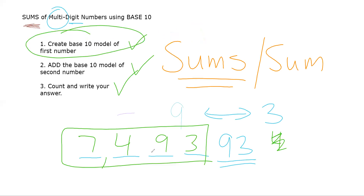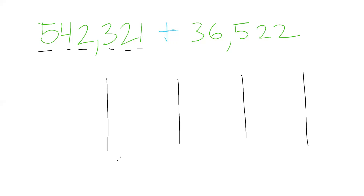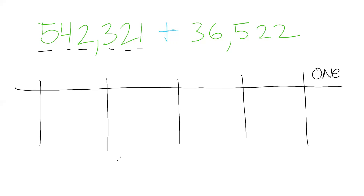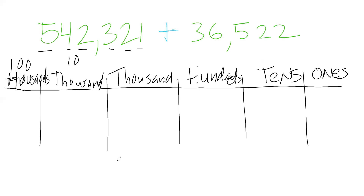Creating a base 10 model means I'm going to create a place value chart and label all the place values. I've got six place values, so the chart is going to be pretty big. The columns are: ones, tens, hundreds, thousands, ten thousands, and hundred thousands.